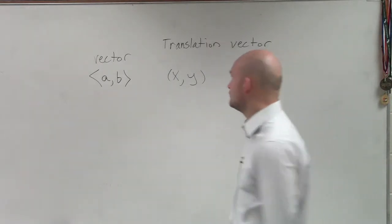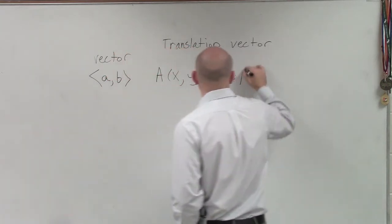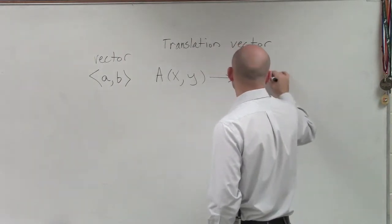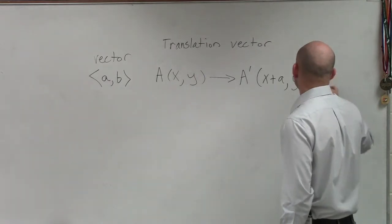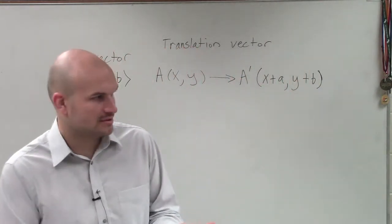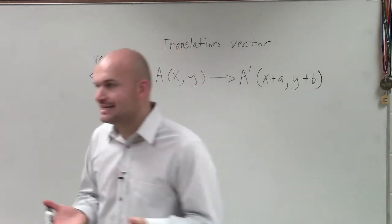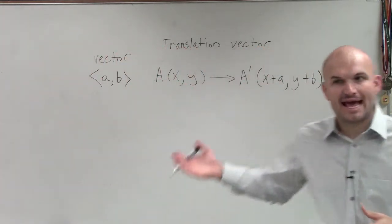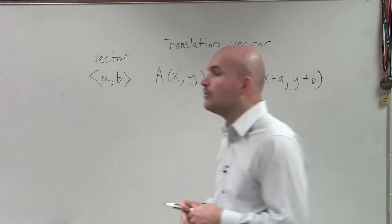Well, what the transformation vector is going to do to our points is if I call this a, then a prime is now going to look like x plus a comma y plus b. So what we're going to now do is take our transformation vector and transform our point by adding the values of the vector to each coordinate. Notice how the a adds to the x-coordinate, and the b adds over to the y-coordinate.